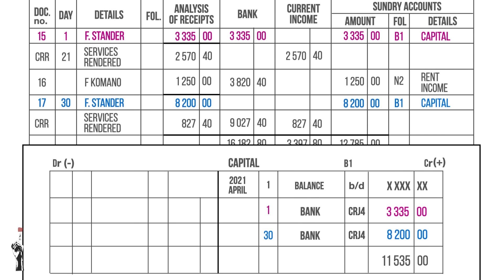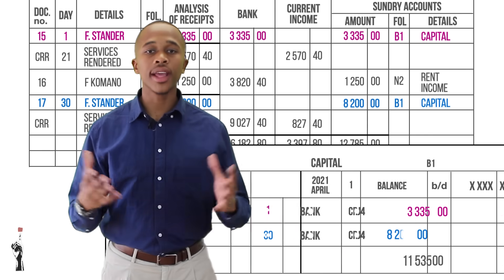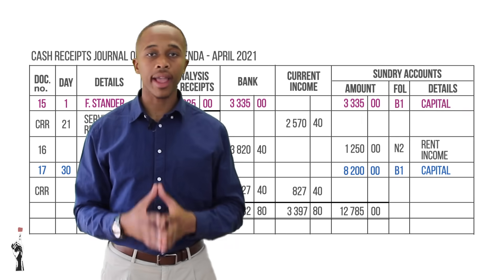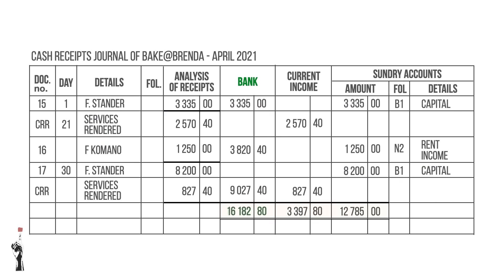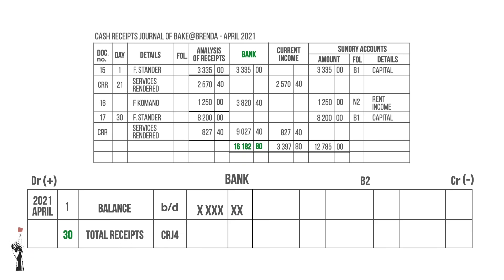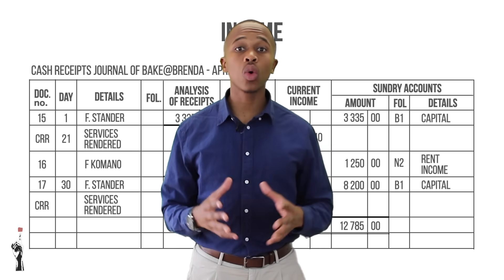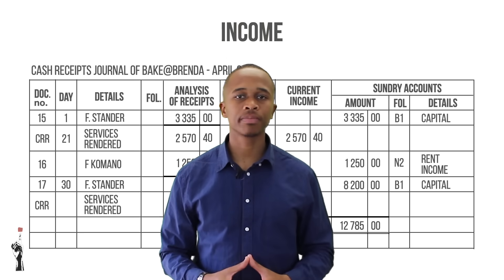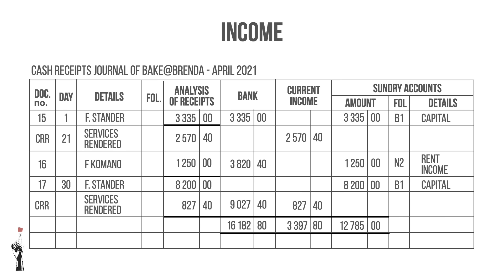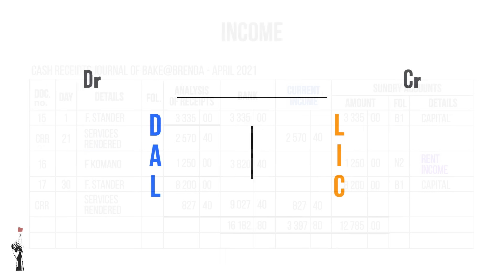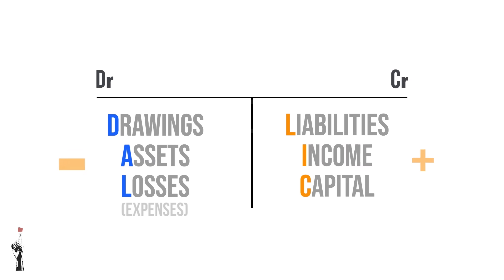The next account to record is bank. Bank is a column total in the journal, so you post the total at the end of the month. Bank increases because money flows into the business; we know that bank is an asset and will therefore increase on the debit side. Next we will record income accounts. In this example there are two types of income: current income and rent income. Remember — income increases on the credit side. Remember DALIC!